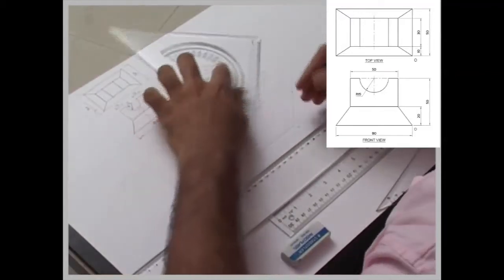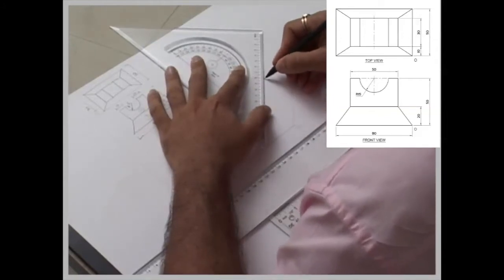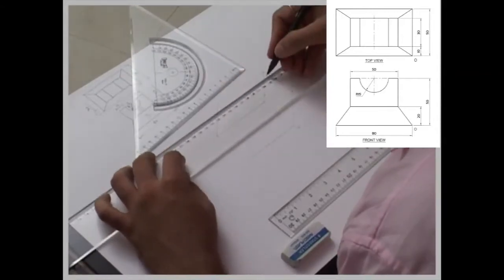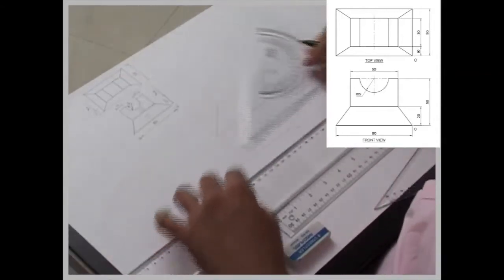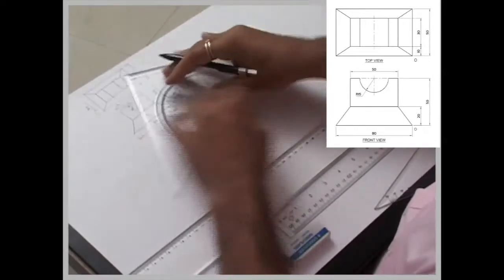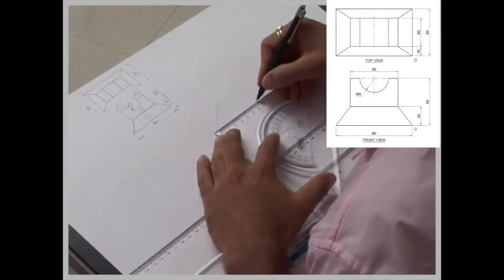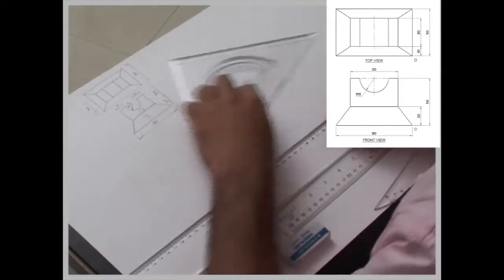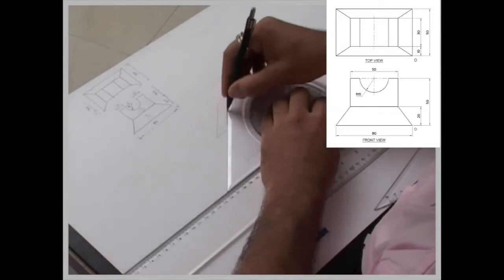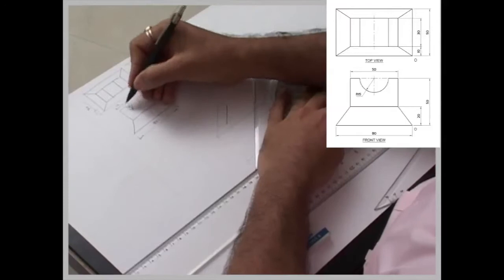So we will take 10 mm and we will draw. We have given this: this is 80 and this is 50, so 15, 15, now both sides. So I have got these two lines, now 10.